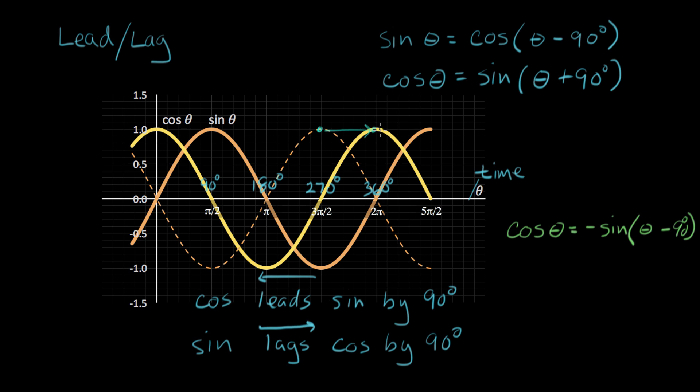So what that means, if I want to know the value of cosine, and I can flip that around the same way, and I can say that negative sign of theta equals cosine of theta plus 90. That's the same identity, but in reverse. If I want to know the value of negative sign, I just take that argument, I add it, I advance it by 90 degrees, and take the cosine, it'll have the same value.